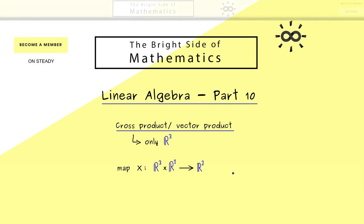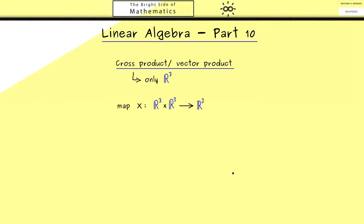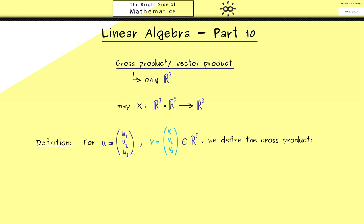More precisely, the cross product is a map with two inputs. As with the inner product, the two inputs are just two vectors. However, now the output is also a vector. It's not so abstract because we can visualize it in space, and moreover all the properties can be nicely visualized. Before we talk about the properties, I want to give you the concrete definition and how to calculate this cross product.